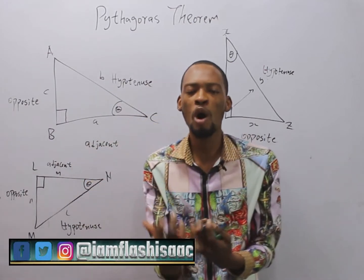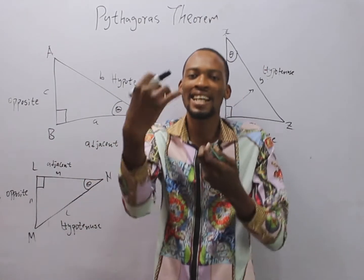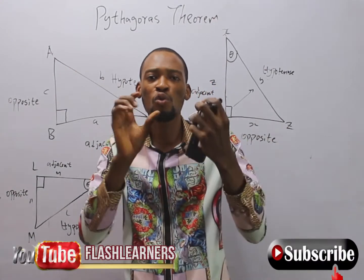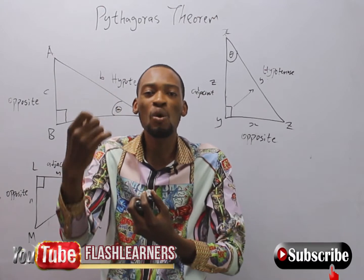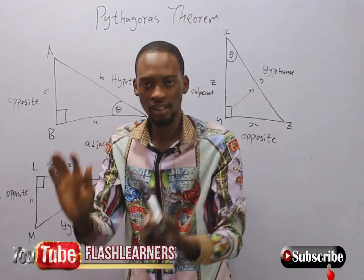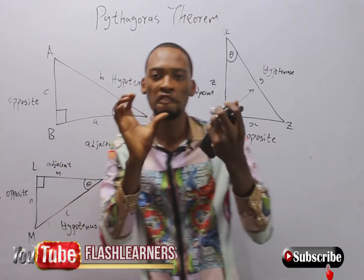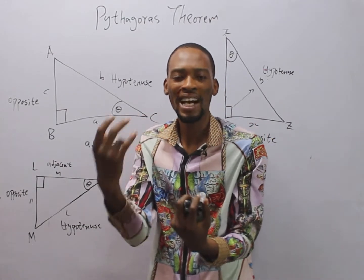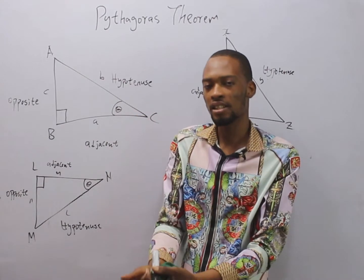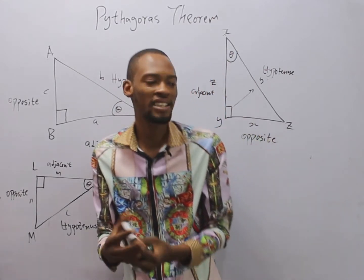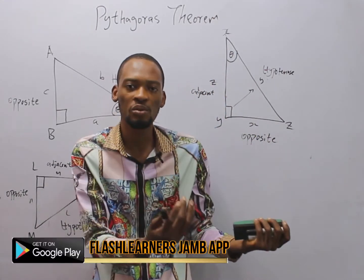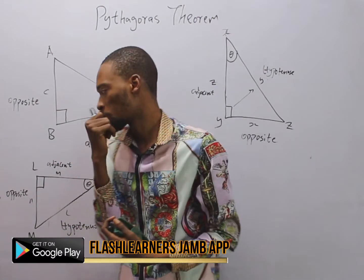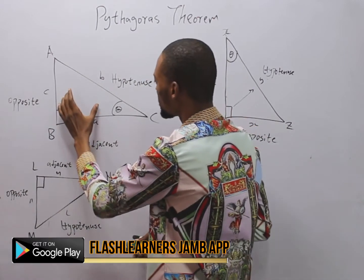Pythagoras' theorem only works for a right-angled triangle. A right-angled triangle is a triangle where one of the angles is equal to 90 degrees. This means that for Pythagoras' theorem to be applied, one of the angles needs to equal 90 degrees. Otherwise, we can use other rules like the sine rule or cosine rule to solve triangles.